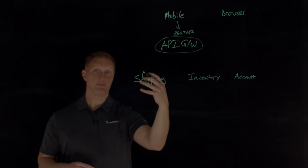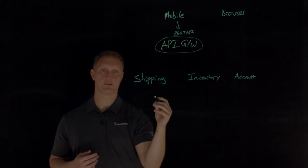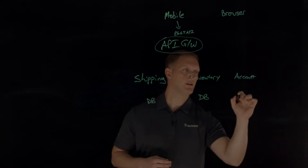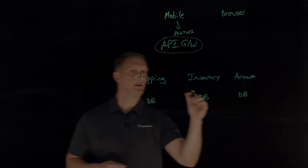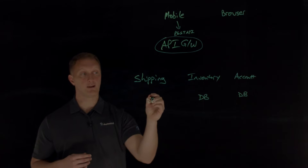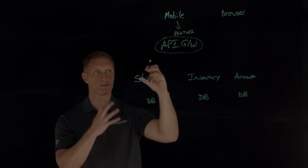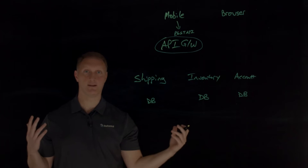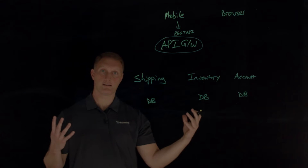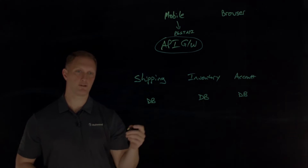Each of these services — the shipping service, the inventory service, or the account service — is connected to a back-end database. One of the nice things about microservices architecture is that you can use a specific database that is conformed to the service you're trying to accomplish. Not all databases perform the exact same functions, so you may need a variety of different databases. So you have a shipping database, an inventory database, and an account database.